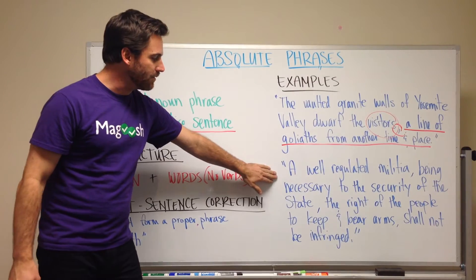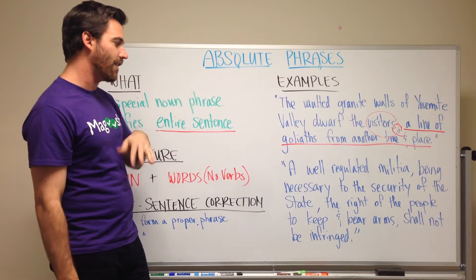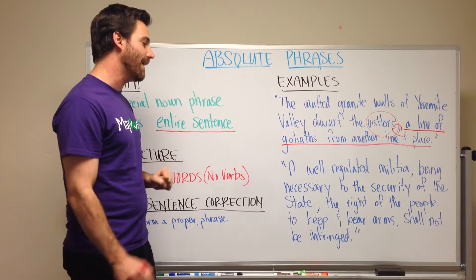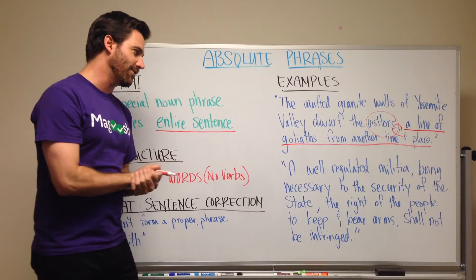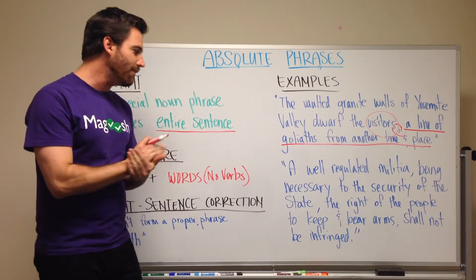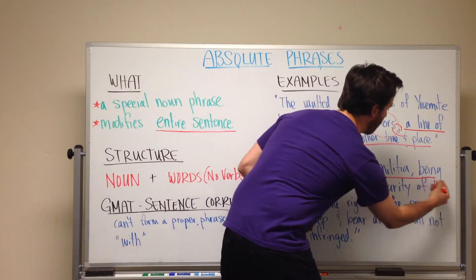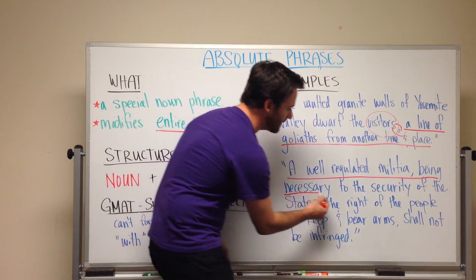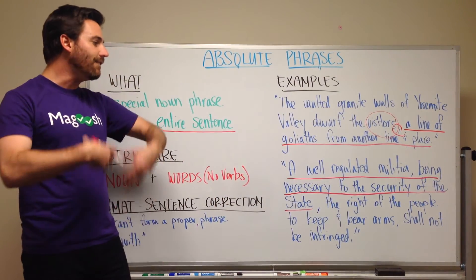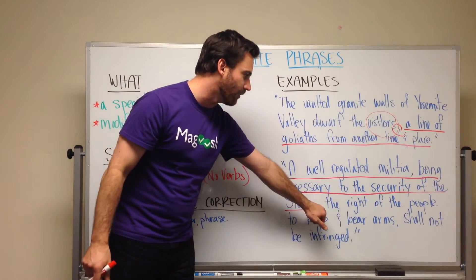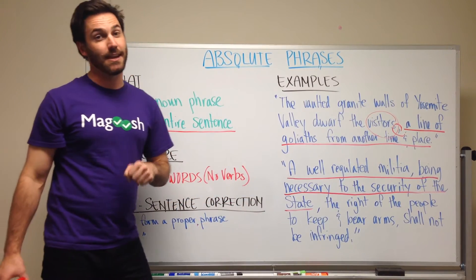Our next example comes from the United States Constitution — it is the Second Amendment. It has one long absolute phrase at the very beginning: 'A well-regulated militia being necessary to the security of the state, the right of the people to keep and bear arms shall not be infringed.' So this whole part — 'a well-regulated militia being necessary to the security of the state' — is an absolute phrase giving us context for the idea that the right of the people to keep and bear arms should not be infringed. It's almost a reason for why they should not be infringed.